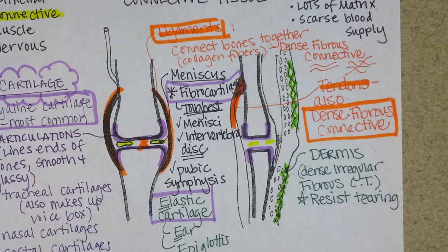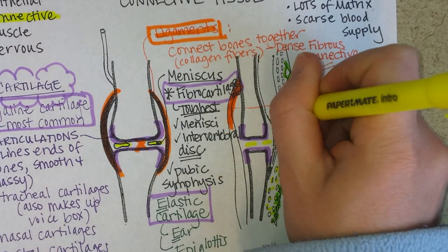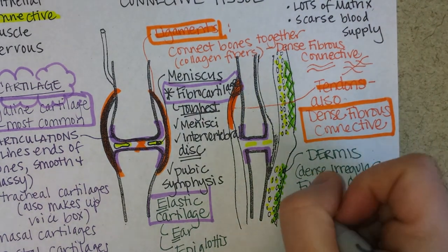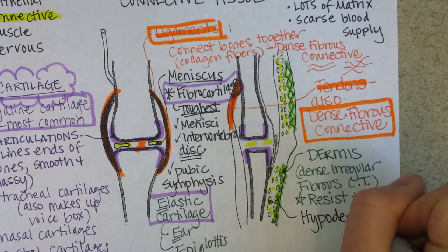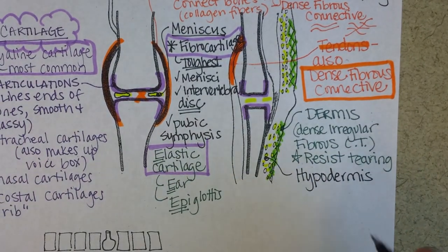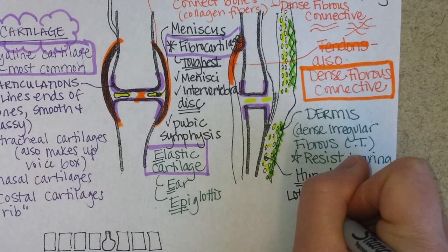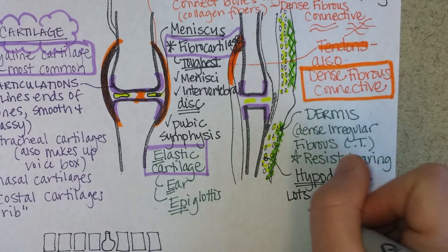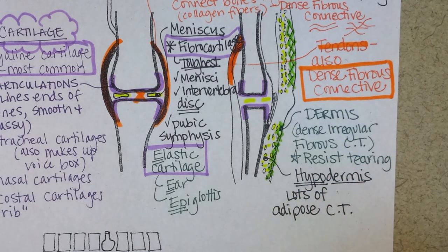Now let's go even lower to the hypodermis. It makes sense to put that in yellow because the hypodermis contains a lot of fat, and fat is yet another kind of connective tissue. Hypo means below the skin, and there's lots of fat here. Even in skinny people there should be some subcutaneous fat in the hypodermis. This is adipose connective tissue.